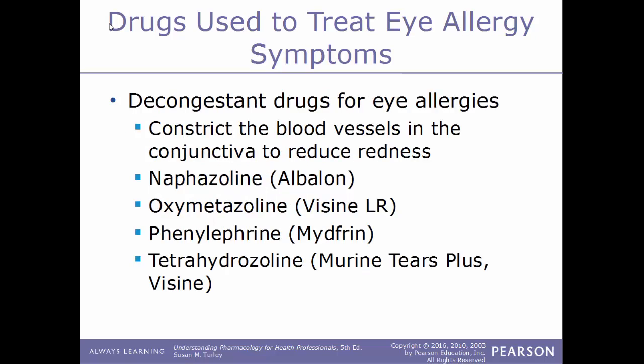The other type of drug used to treat eye allergy symptoms are decongestant drugs. These work by constricting the blood vessels in the conjunctiva to reduce redness. Examples include naphazoline, sold as Albalon; oxymetazoline, sold as Visine-LR; phenylephrine, sold as Mydfrin; and tetrahydrozoline, sold as Murine, Tears Plus, and Visine.